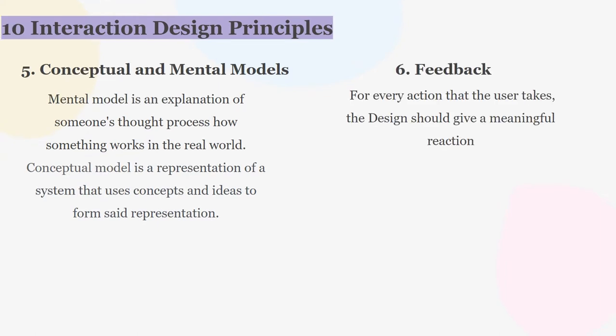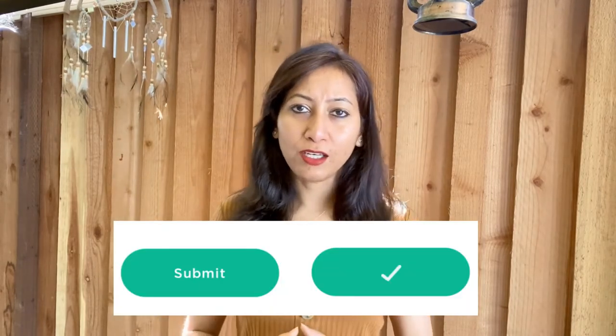Number six is feedback. For every action the user takes, the design should give a meaningful reaction. Think about Gmail — whenever you send an email, you get feedback that your email has been successfully sent. Or think about submitting a form online — you always get feedback that the submission was successful. Just think about what would happen if you didn't get these kinds of feedback; it would create a bad experience.